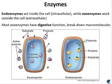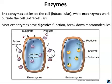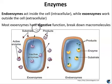Endoenzymes act inside the cell — for example, building proteins from amino acids. Those are endoenzymes, and those are anabolic reactions. Whereas exoenzymes are enzymes that work outside of the cell, breaking down larger molecules so that they're small enough for the cell to bring them in. So exoenzymes are associated with catabolic reactions — essentially the cell is eating what's outside of it using enzymes that break it down.